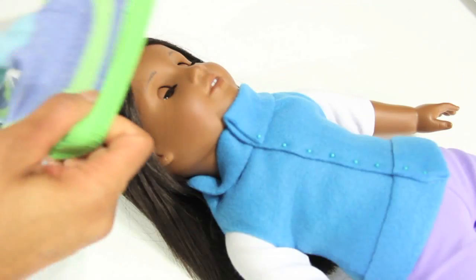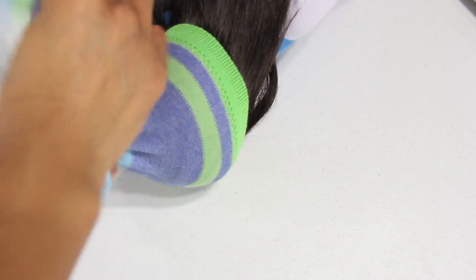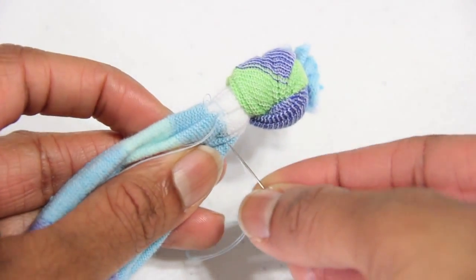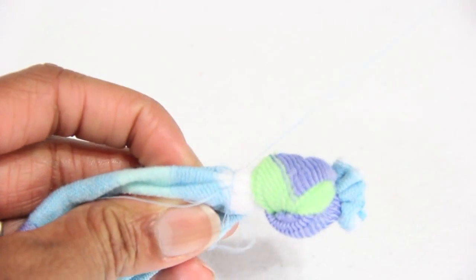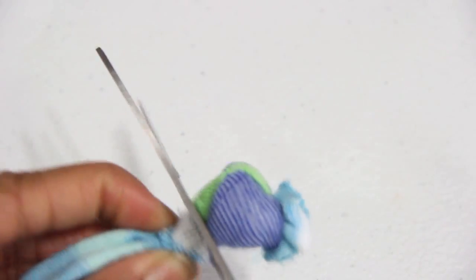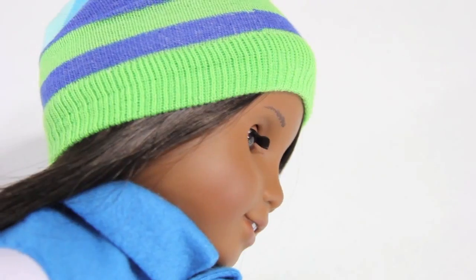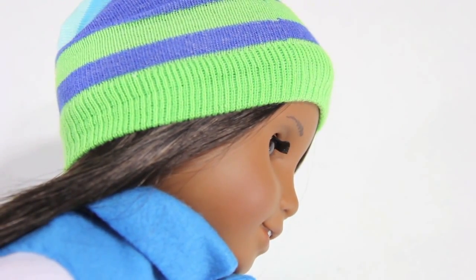Take an inside out sock, put it on your doll's head, and tie it into a knot. Use a needle and thread to secure it, then trim off the knot. Flip it right side out to make a cute little hat.